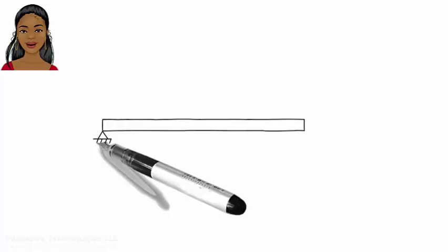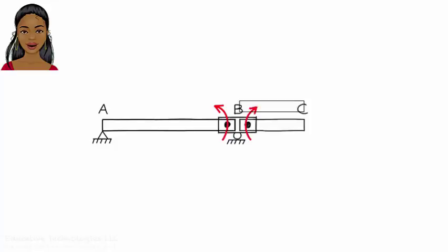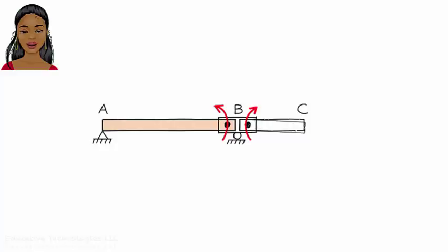Here is another example beam. What is the moment influence line for point B? First, place a hinge at B. Then apply a positive bending moment to the hinge. Now draw the resulting displaced shape of the beam. When drawing the displaced shape, make sure the beam segments — let's call them bars — remain straight. That is, they can move up or down and turn, but they cannot bend. Bar BC wants to turn clockwise, and bar AB wants to turn counterclockwise. BC does turn clockwise, since the free end of the beam can move down to accommodate the rotation.